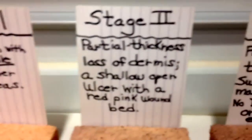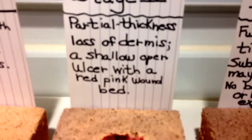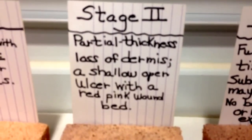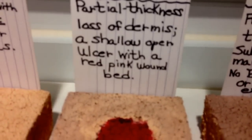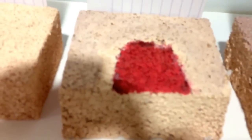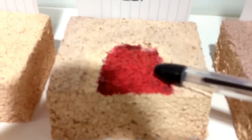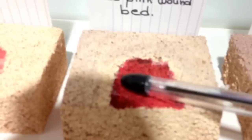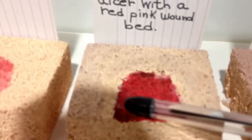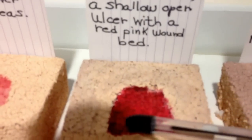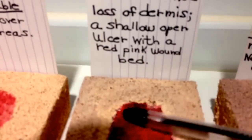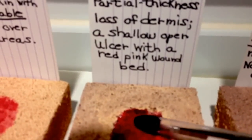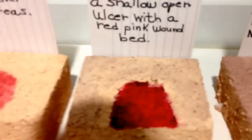Now let's go to stage two. Stage two is known as partial thickness loss of the dermis, or a shallow open ulcer with a red-pink wound. As you can see in the stage two wound, there's a partial thickness of the wound exposed and you can see it's like an open ulcer. The dermis is already being lost in stage two — that is the key characteristic.